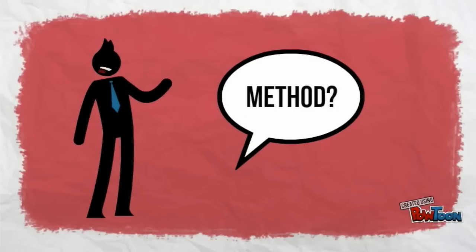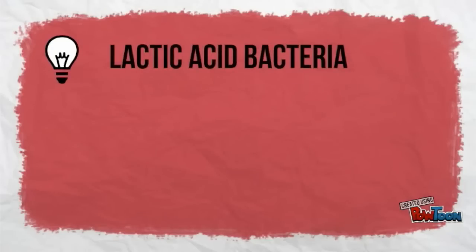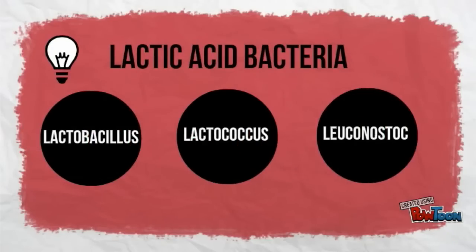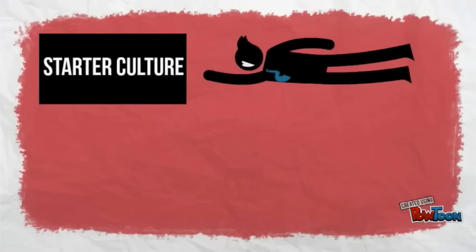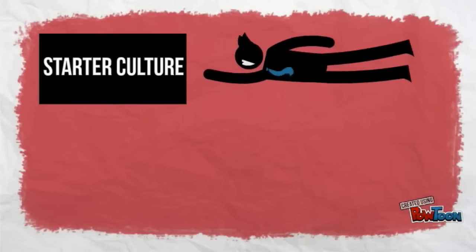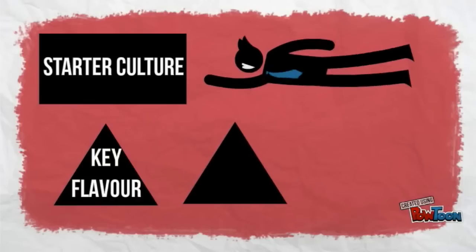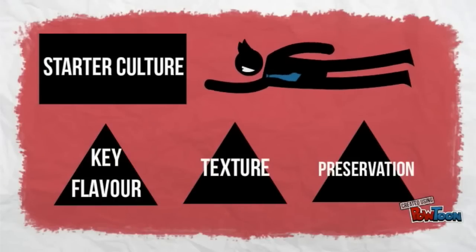So what's the method of making these products? Lactic acid bacteria such as Lactobacillus, Lactococcus and Leuconostoc are used as starter culture, producing lactic acid during fermentative metabolism. They contribute to the key flavour, texture and preservative quality of fermented products.